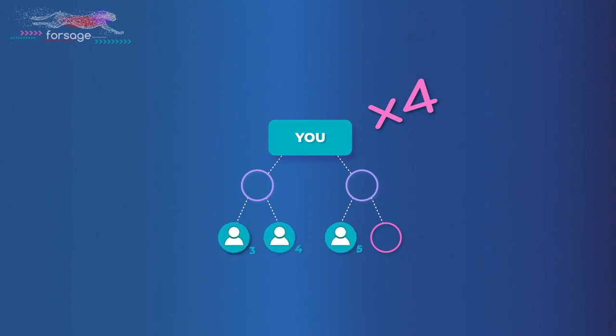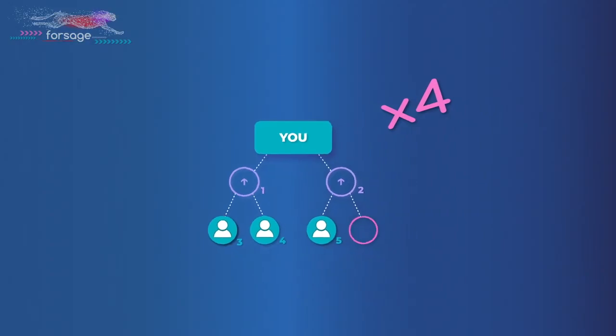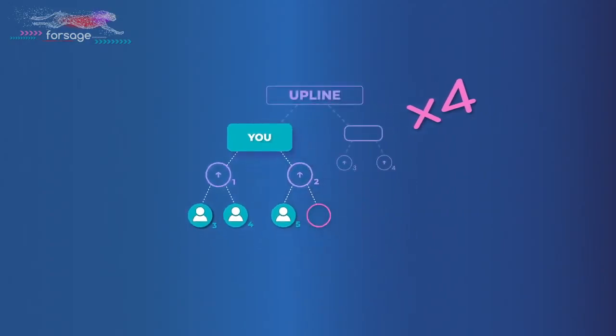Incoming X4 we get from the second line. Partners who occupy two places below you in the first line, are two places in the second line of your upline. A 100% payment goes to the wallet of your higher partner. You also receive income from the second line. 100% from four partners.